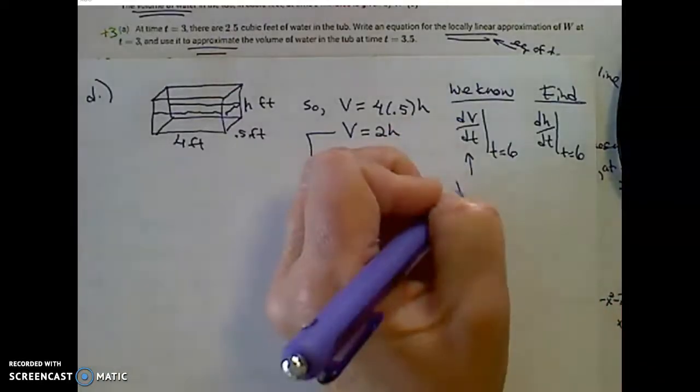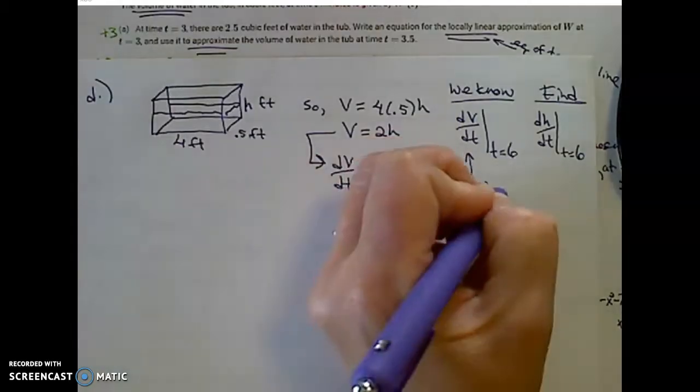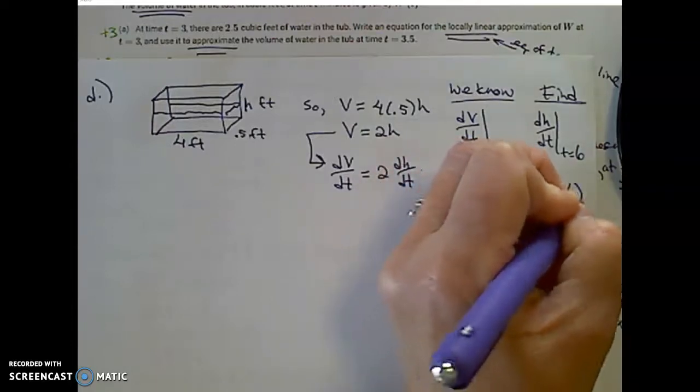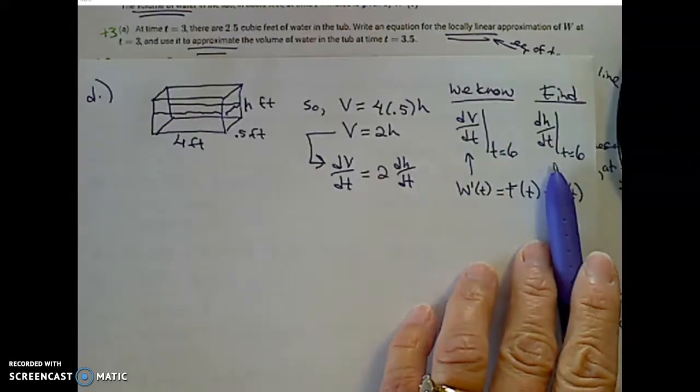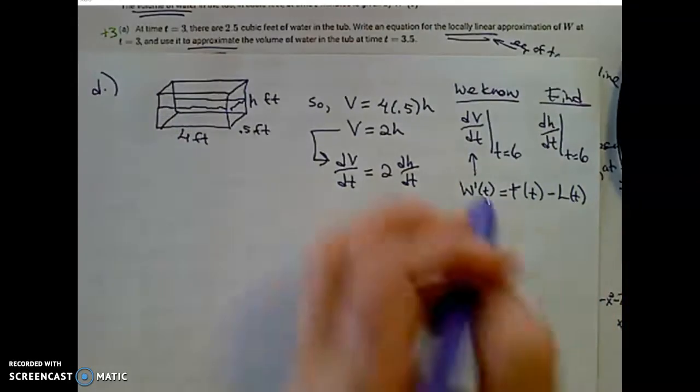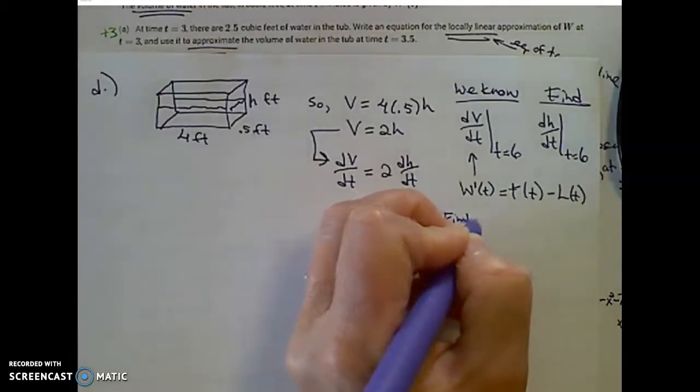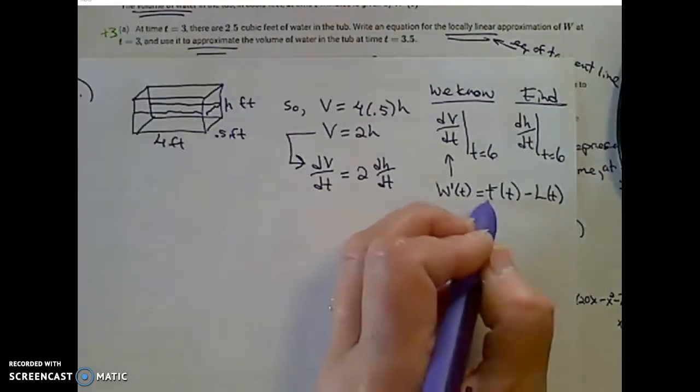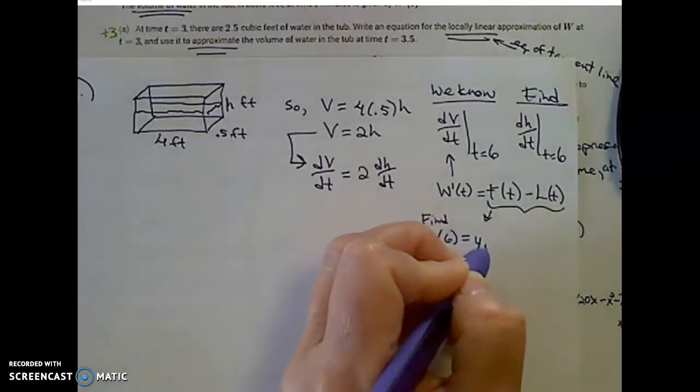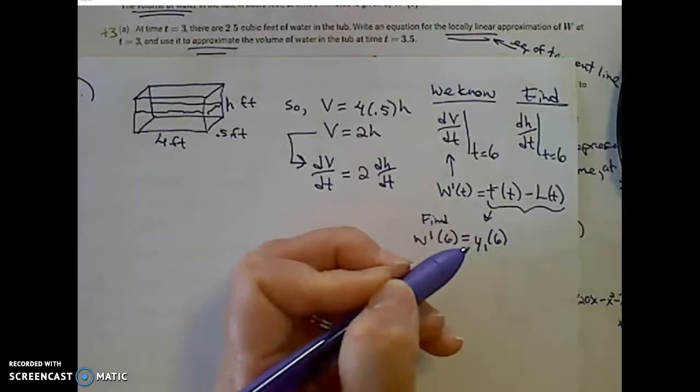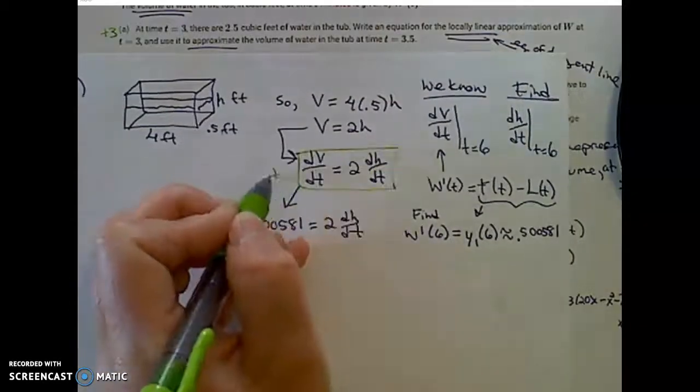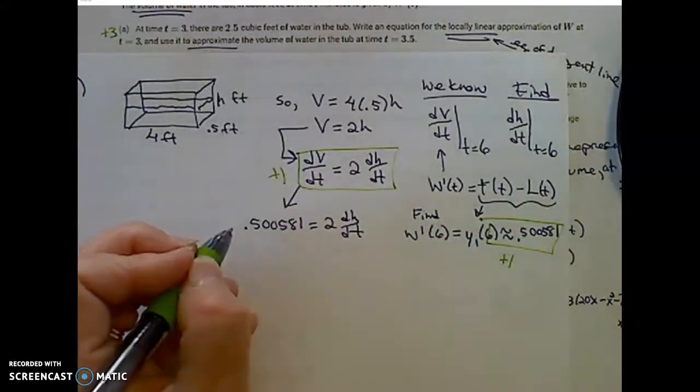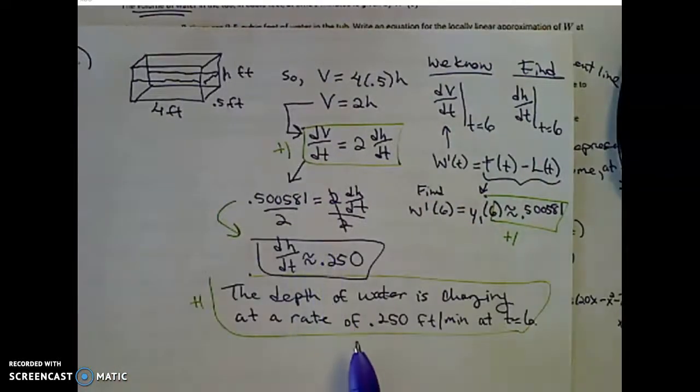Realize we know this because this is the rate of change of volume, which we know is f of t minus l of t. And we need to find the rate of change of the height at time equal to 6. I do need to calculate this, so I need to find w prime of 6. Luckily, this is still in my calculator, so I really just need to evaluate y1 of 6. Please do that. You earn one point for this, one point for that derivative, and let me solve and state my solution.